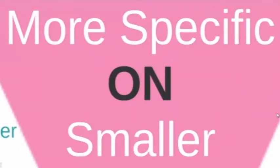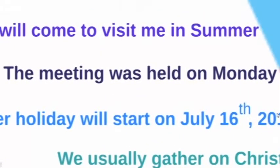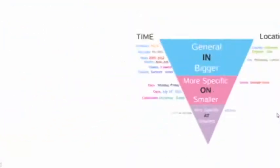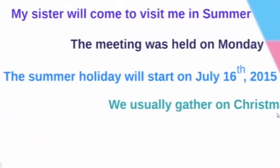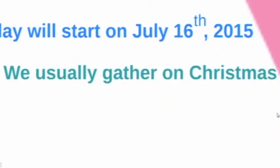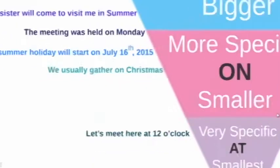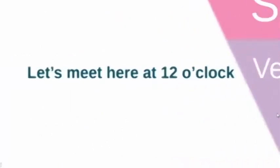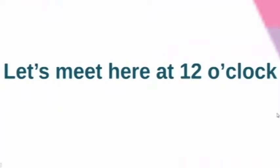On is used for something more specific or smaller, like days. For example, the meeting was held on Monday. Dates — for example, the summer holiday will start on July 16, 2015. Celebration — for example, we usually gather on Christmas. At is used for something very specific or smaller, like hours. For example, let's meet here at 12 o'clock.